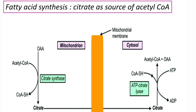Coming to the role of citric acid cycle in fatty acid synthesis: the starting material required for fatty acid synthesis is acetyl-CoA. Fatty acid synthesis takes place in the cytosol, but acetyl-CoA is formed in the mitochondria and cannot cross the mitochondrial membrane. Therefore, acetyl-CoA is converted into citrate by citrate synthase in the mitochondria. Citrate crosses the mitochondrial membrane, and in the cytosol, the enzyme citrate lyase converts it back to acetyl-CoA and oxaloacetate. The cytosolic acetyl-CoA is then used for fatty acid synthesis.